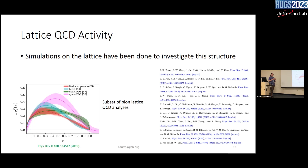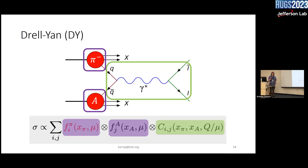On lattice QCD: there's been a lot of effort to calculate pion PDFs on the lattice. However, the lattice is never on the light cone, and PDFs are defined on the light cone, so you calculate certain matrix elements close to PDFs that can be related to them. Strictly speaking, lattice QCD does not directly give you PDFs, but there's a large community effort, and I show a subset of pion lattice QCD analyses here.